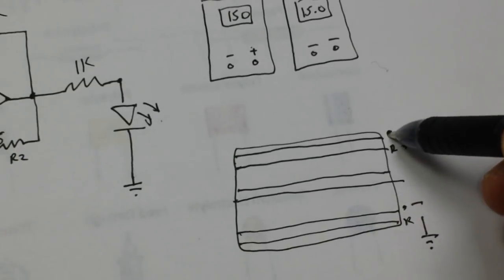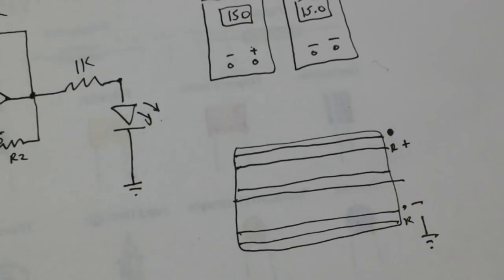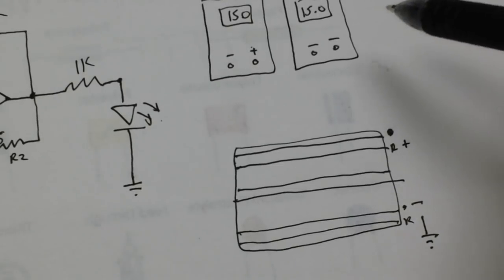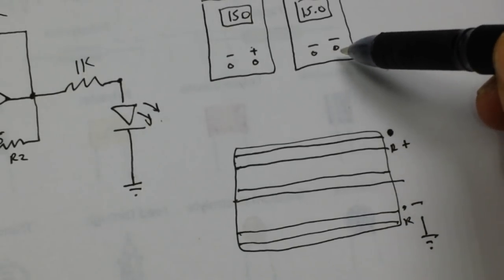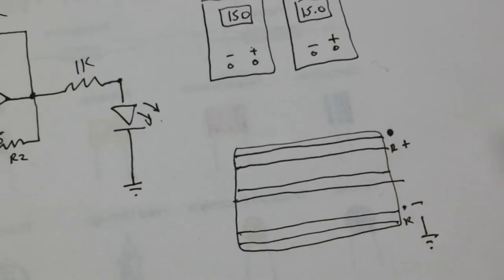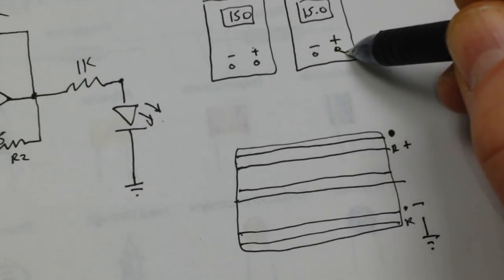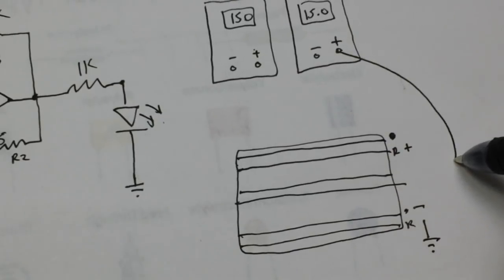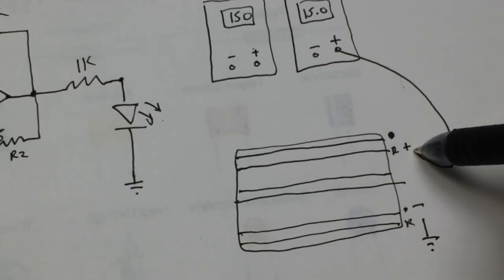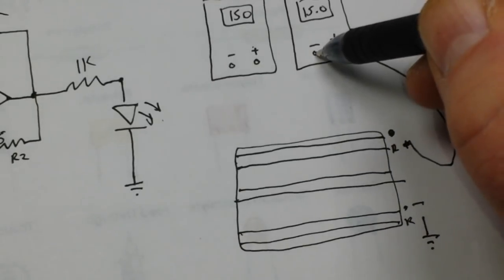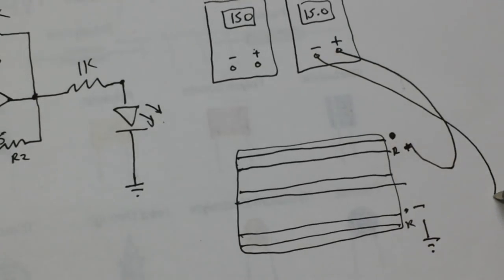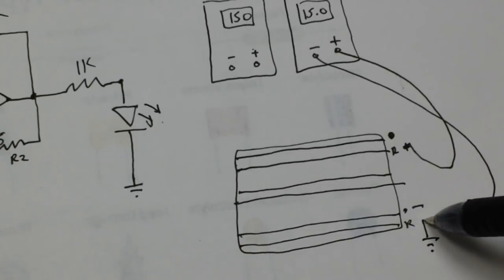Now this blue rail is going to be our ground. We're not going to use this rail up here. Are you with me so far? So what we're going to do is we're going to take the positive voltage from one of our power supplies and we're going to bring it to the positive rail here, and the negative is going to come down here to our ground.